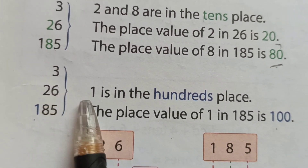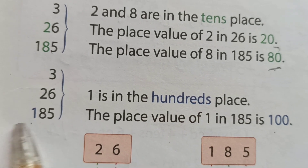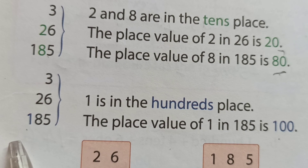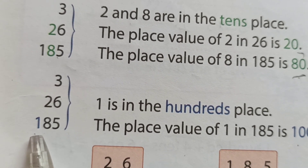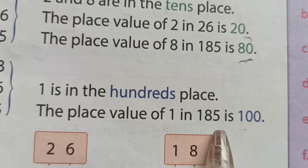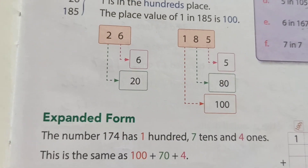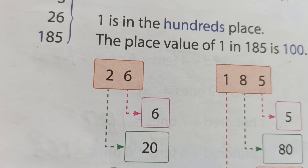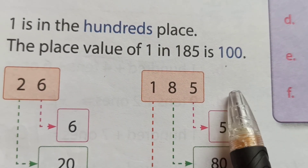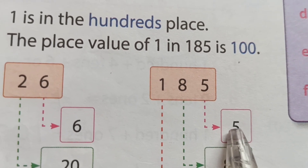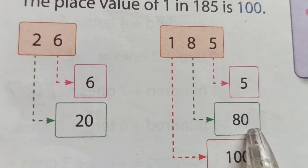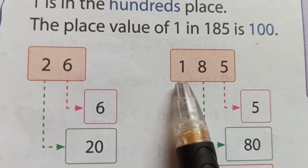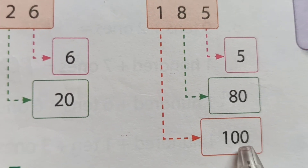Then see, 1 is in the 100's place. The place value of 1 in 185 is 100. See how we are writing: in 26, 6's place value is 6 and 2's place value is 20. In 185, 5's place value is 5, 8's place value is 80 because 8 is in the 10's place, and 1's place value is 100.